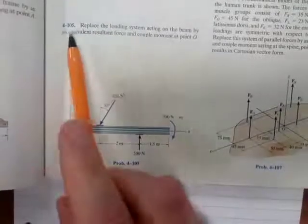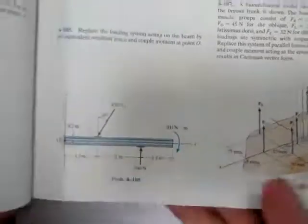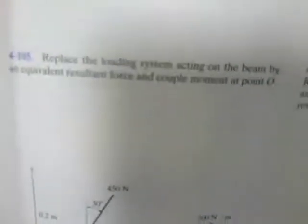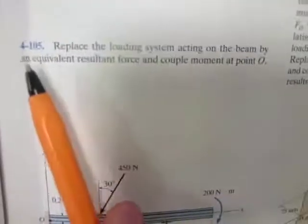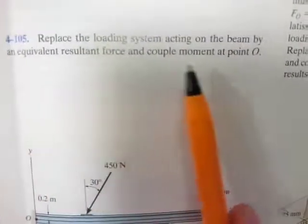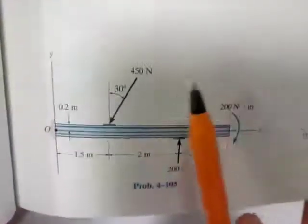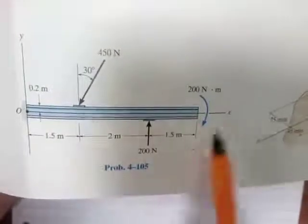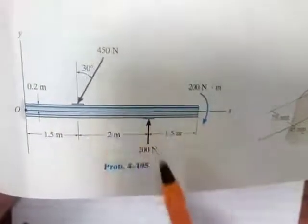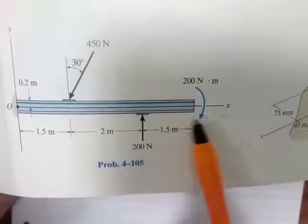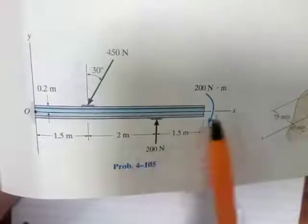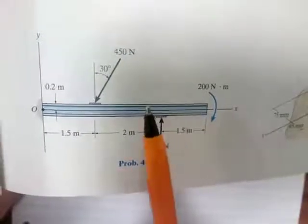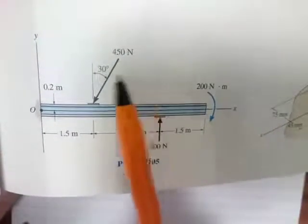Okay guys, problem 4-105 in the 14th edition. It says: replace the loading system acting on the beam by an equivalent resultant force and couple moment at point O. So there's a bunch of stuff happening here — we've got a force there, a force there, and a couple moment here, and we are required to replace the system with an equivalent system.